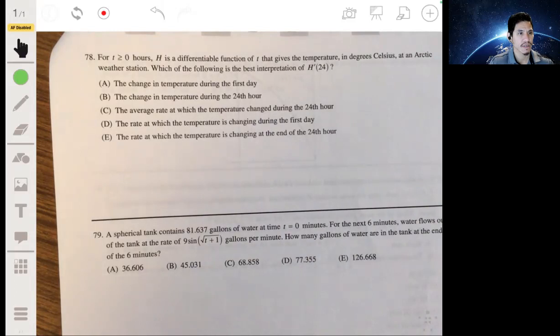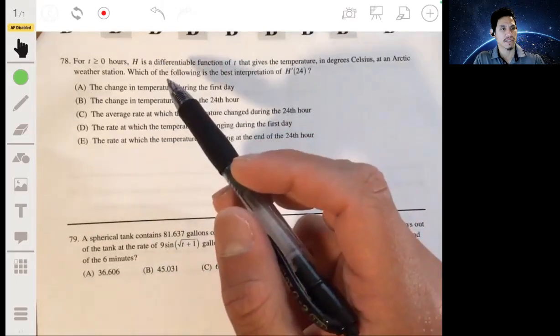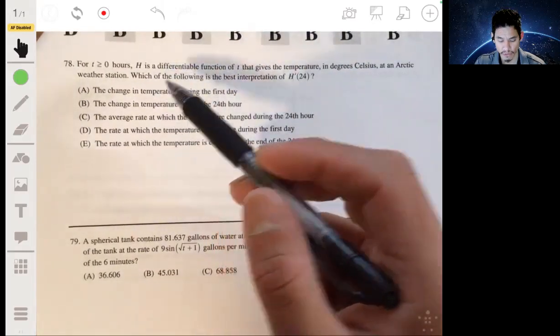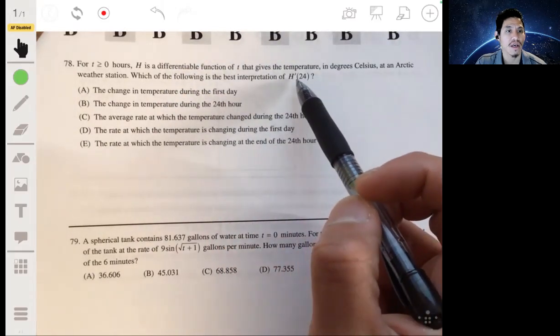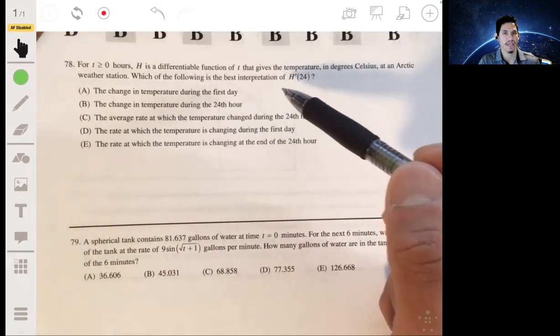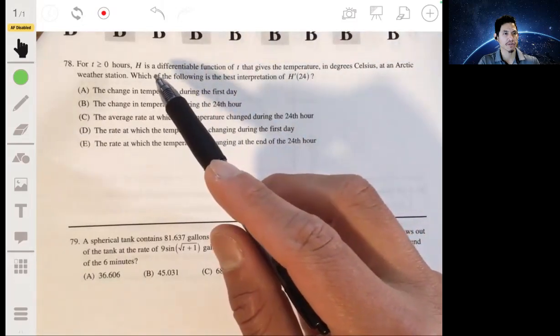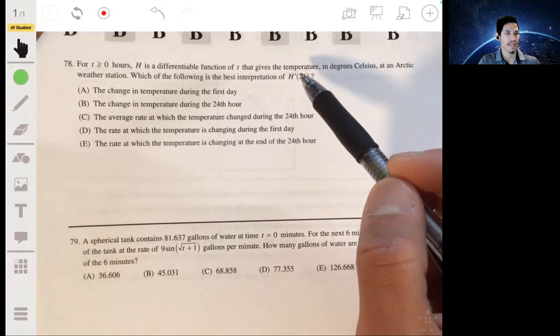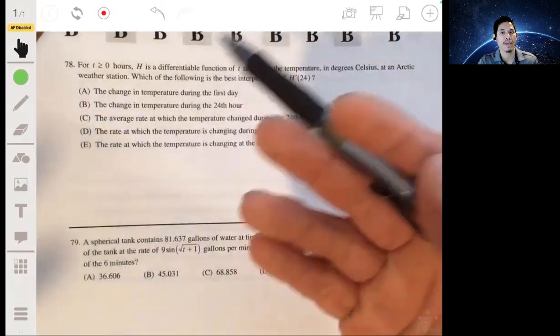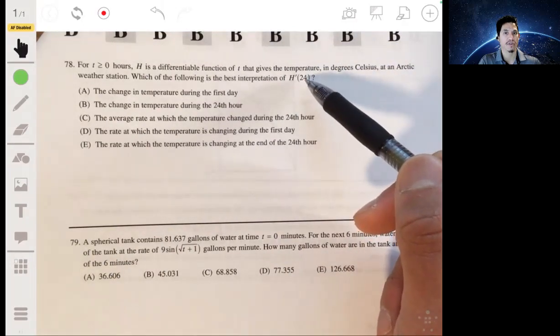Alright, 78. We're told that for t greater than or equal to 0 hours, h is a differentiable function of t that gives the temperature in degrees Celsius at an arctic weather station. Which of the following is the best interpretation of h prime 24? Okay, so it's really just a matter of understanding what the derivative is in relation to the original function. If h represents the temperature, then h prime, or the derivative of h, represents the way the temperature is changing—the rate of change of temperature. And for this specific value we're looking at t is 24, so we're basically looking at the rate of change of temperature at the 24th hour.